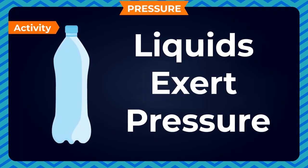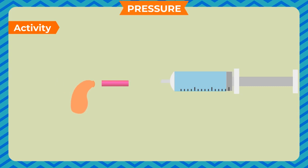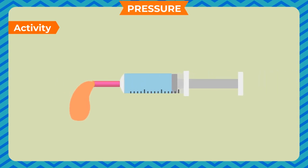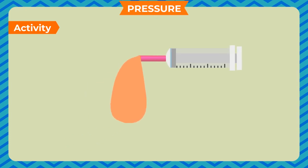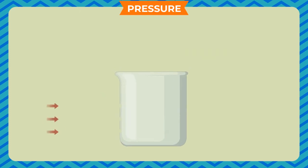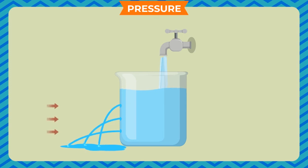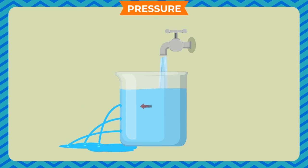Liquids exert pressure: Take a glass tube open at both ends, tie a balloon on the lower end, and pour water through the other end — the balloon starts bulging because the water exerts pressure on it. Take an empty can with three holes on its sides and pour liquid in it. The liquid finds its way out through the holes. The water through the bottommost hole comes out with maximum pressure and the water through the uppermost hole comes out with least pressure, showing that liquid pressure increases with increasing depth.